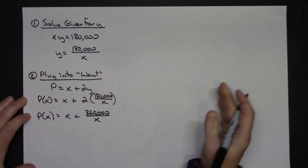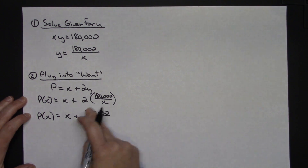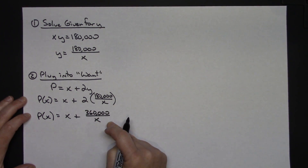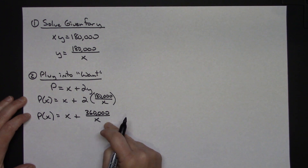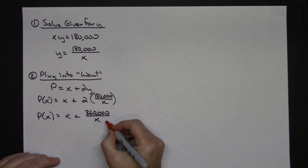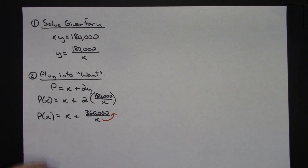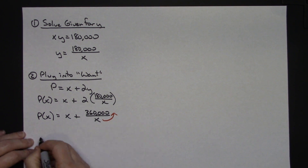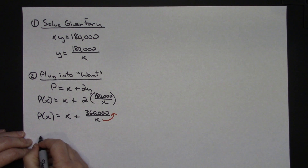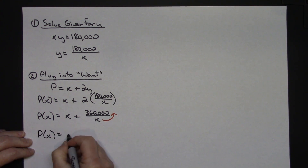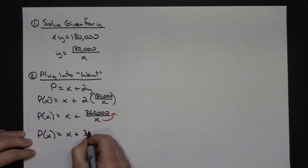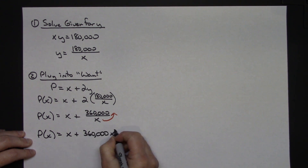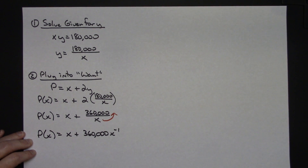Keeping in mind that I'll need to take the derivative next, I don't want to use the quotient rule on 360,000 over X. So I'll move the X up and make it a negative exponent — by laws of exponents you can legally do that, and it makes taking the derivative much easier. So P of X equals X plus 360,000 X to the negative 1.